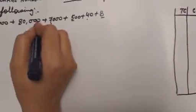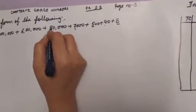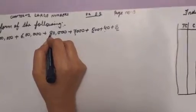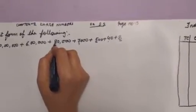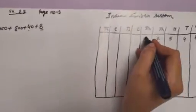Next — ones, tens, hundred, thousand, ten thousand — so we will write eight in ten thousands place.